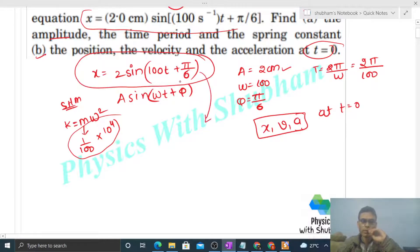If you put t = 0, then x will be directly 2 sin(0 + π/6). What is sin(π/6)? That is 1/2. So x equals 1 centimeter.